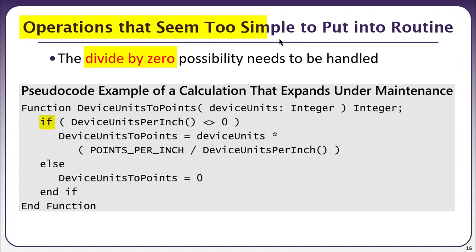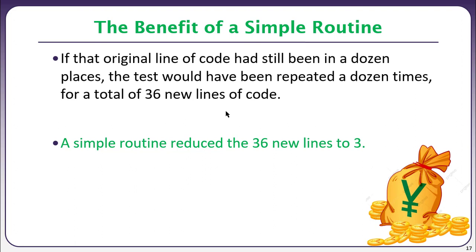The summary is that operations that seem too simple to warrant a function are sometimes very helpful when placed in the body of a function and called from multiple places. If the original line of code had been written in a dozen places, you would have to visit each one to add the condition or zero-value check. With a function, you only fix it in one place.